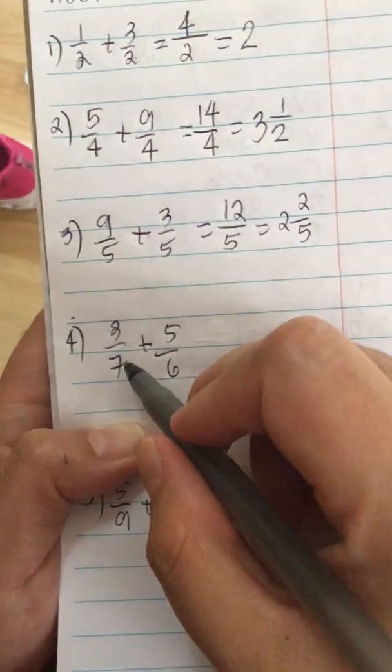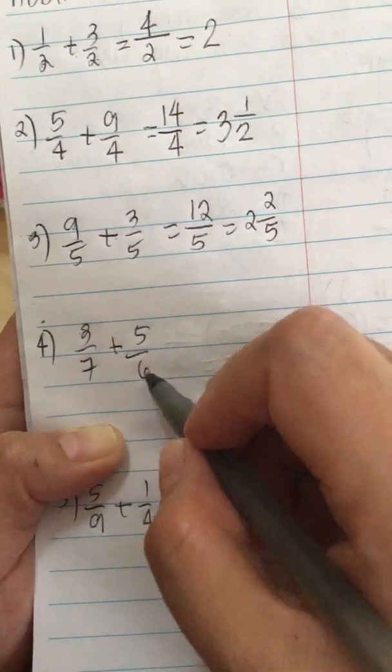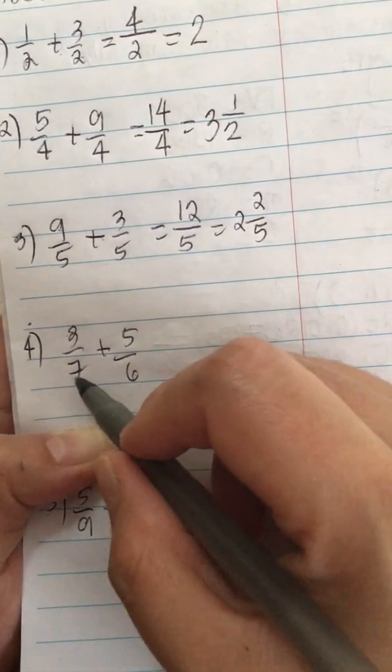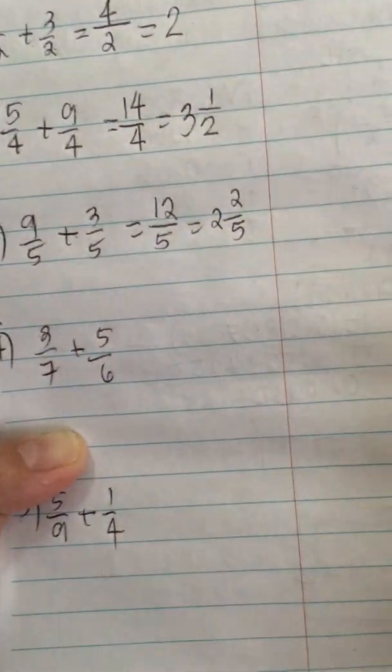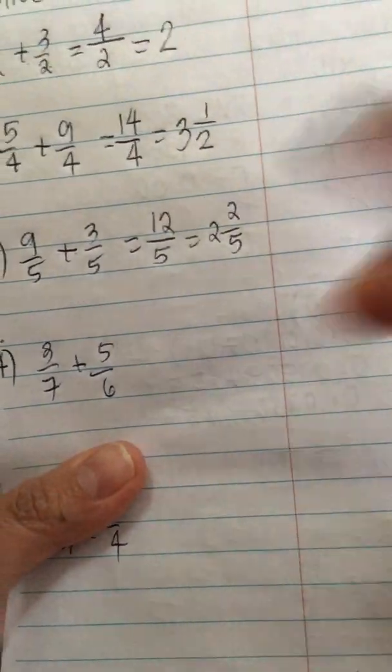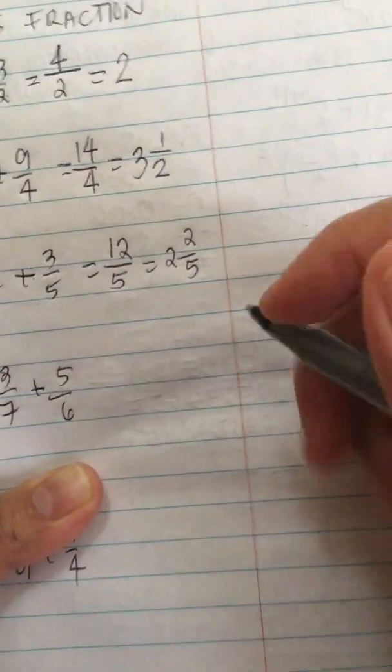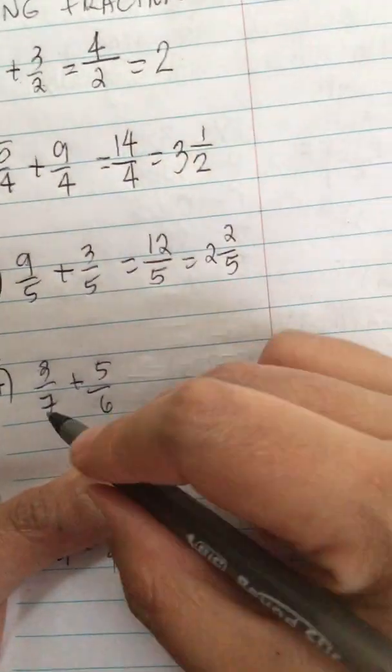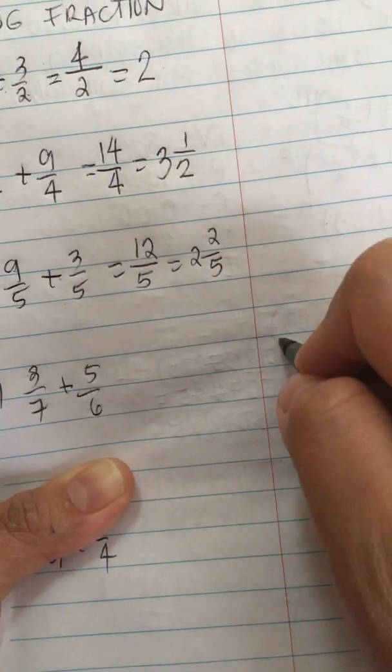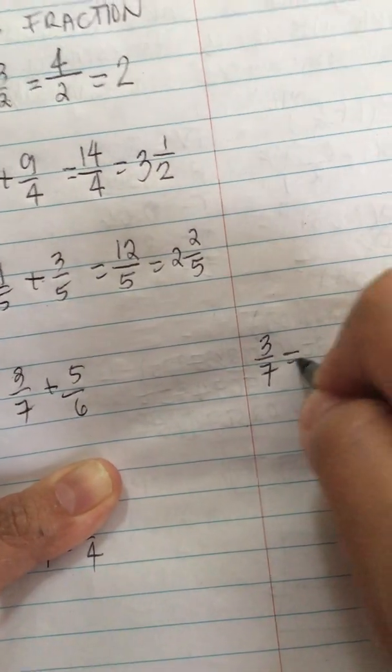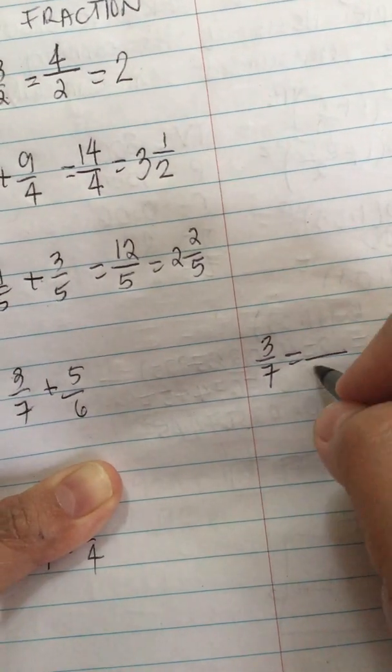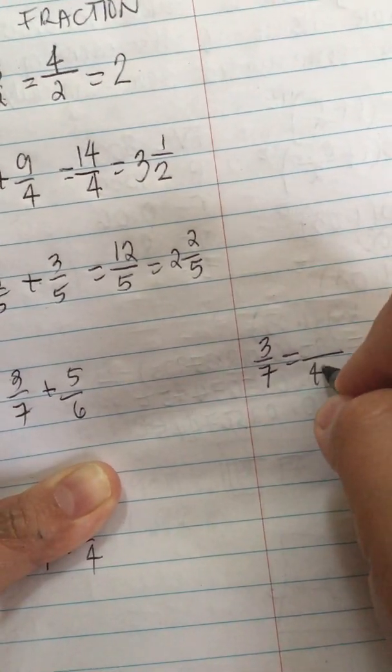Now here, they don't have the same denominator, so we can't add them right away. We have a 7 and a 6, so we have to find the LCD, or least common denominator. So we change the fraction to 3 over 7 equals something over the LCD, which is 42.